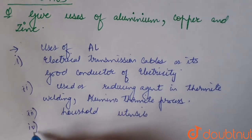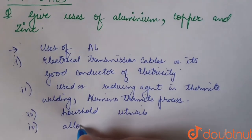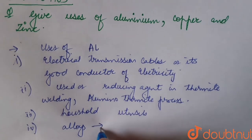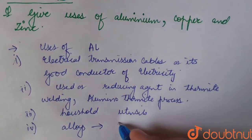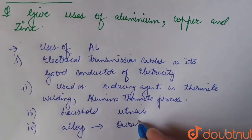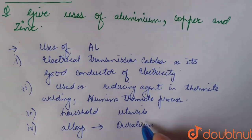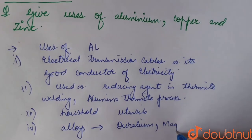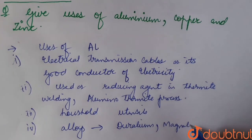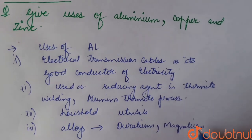It's also used for making certain alloys. Most common aluminum alloys include duralumin, magnalium, etc.